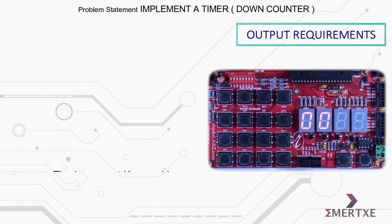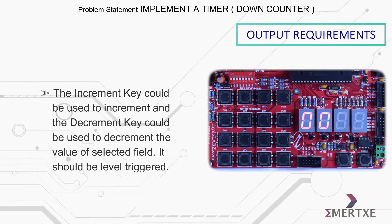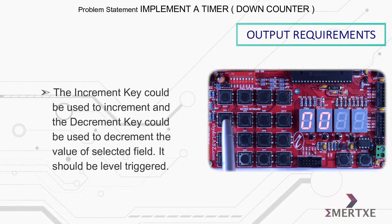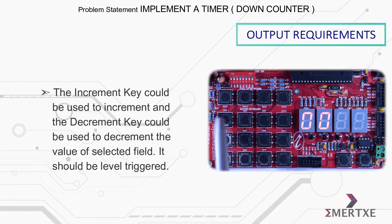The fields can be selected with the choose field key, and the selected field should blink at the rate of 500 milliseconds indicating the selection. The increment key can be used to increment and the decrement key to decrement the value of the selected field.